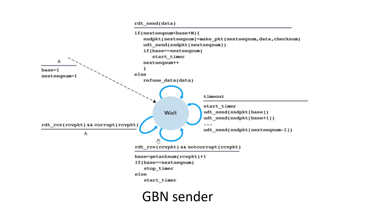If a packet is received and is not corrupted, the base is incremented: base equals last ACK number plus 1. The timer is stopped if base equals next sequence number; otherwise, the timer is restarted. If a corrupt packet is received, the sender waits for the timeout before retransmitting.